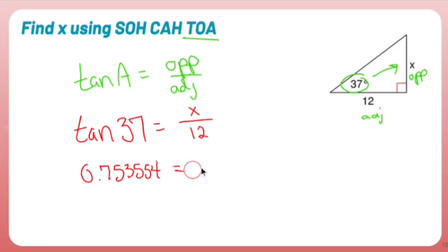An unnecessary amount of decimals, but I always like to write more than I need. So tan 37 turns into that. Nothing happens on the right side until now.